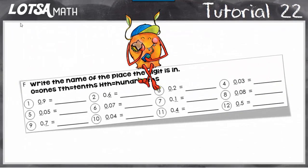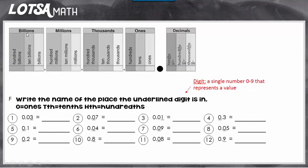For these questions you're going to name the underlined digit's place. So let's look at the directions. It says write the name of the place the underlined digit is in. And a digit, remember, is just a single number. You're going to use this code: O for ones, tth for tenths, and hth for hundredths. So let's do some examples.